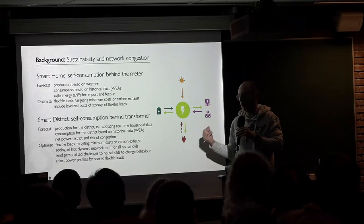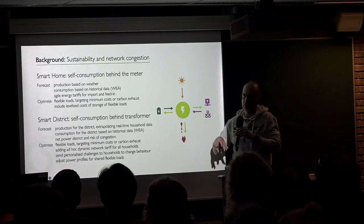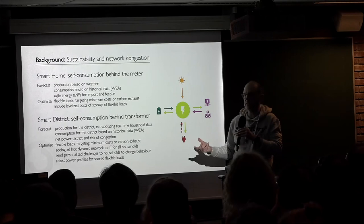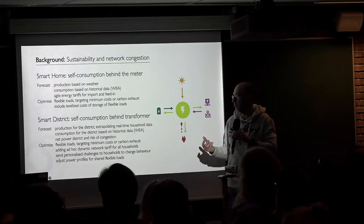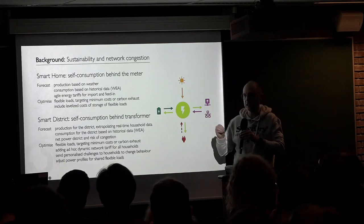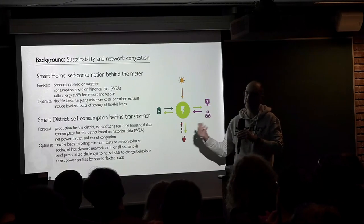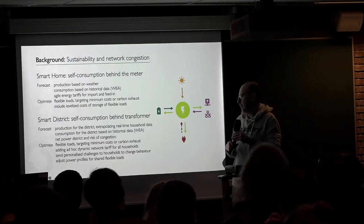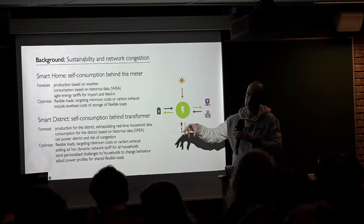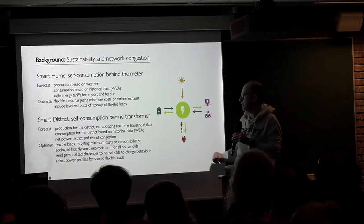An additional problem arises because in a district you have many households, each with their own technology, making it complex to control and automate them. One approach we're exploring is interfacing with home automation systems like OpenHAB or Home Assistant. Another way is through manual impact — sending personal challenges to every household where people can earn points, which basically earns them money, if they play nice within the ecosystem. We can also control shared flexible loads — for instance, shared EV charging stations in a district — and limit the available power to keep the grid under control.